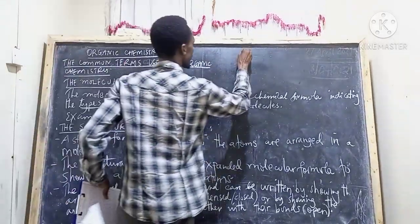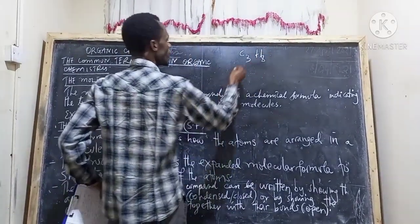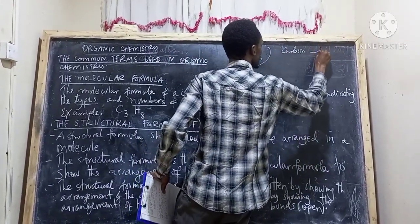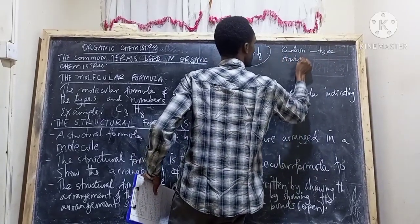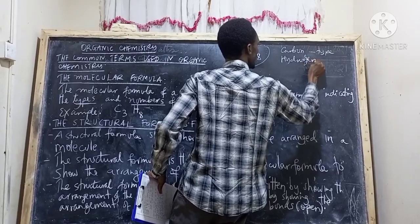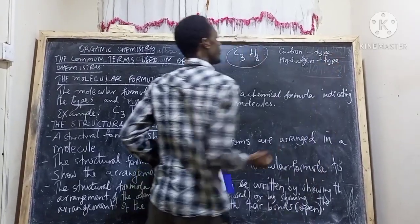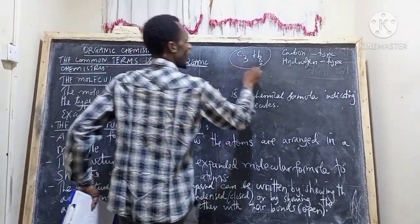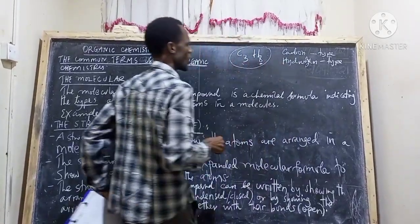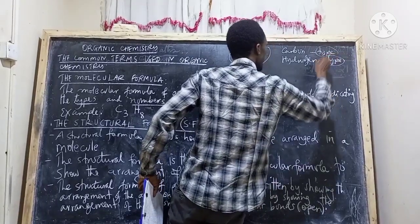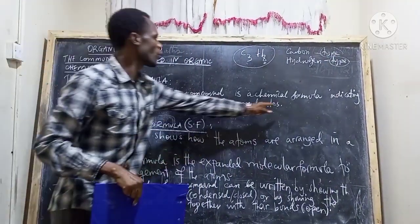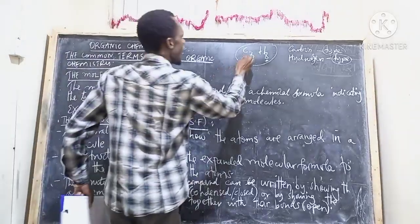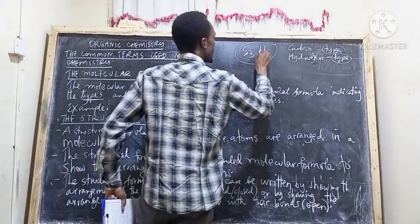For example, we have C3H8. This molecular formula is made up of carbon — that is the type — and it is made up of hydrogen — that is also the type. But how many hydrogens are there? We have eight hydrogens. How many carbons are there? We have three carbons. So the molecular formula indicates the type and number of atoms in a molecule.